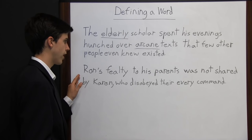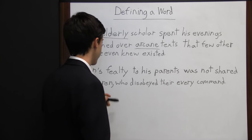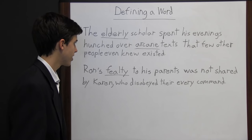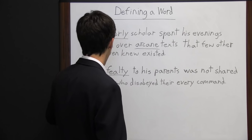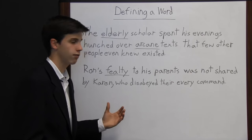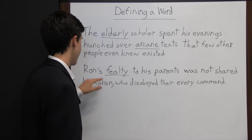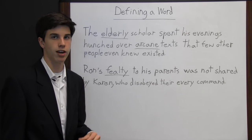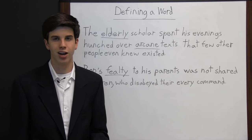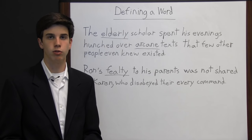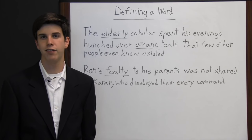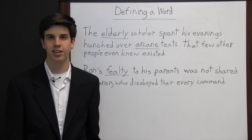Another example: 'Ron's fealty to his parents was not shared by Karen, who disobeyed their every command.' There aren't many words here that tell us what 'fealty' is — instead we see words that tell us what it is not. Karen disobeyed their every command, while Ron did not, so fealty must mean obeying or being faithful to. By looking at context clues, a reader can quickly determine the definition of a word, and although it may not be the exact definition, it generally works for that sentence — making context clues much quicker than consulting a dictionary.